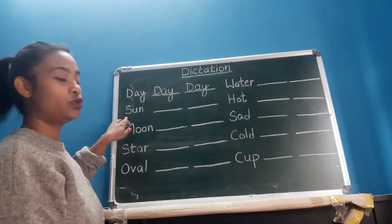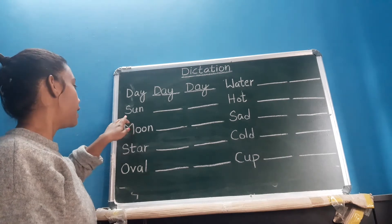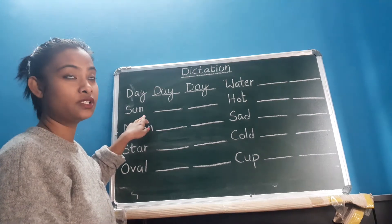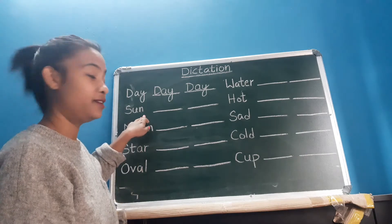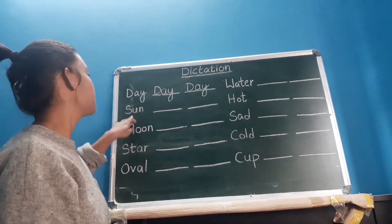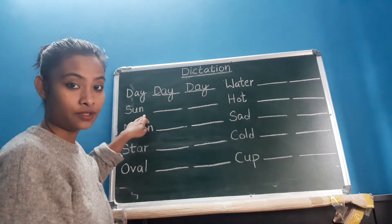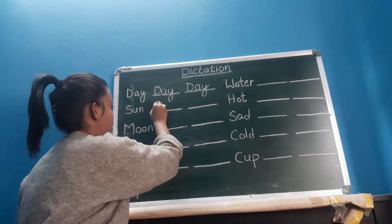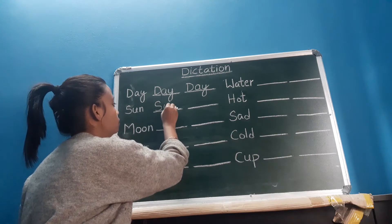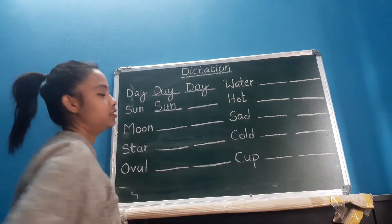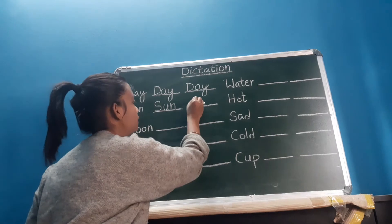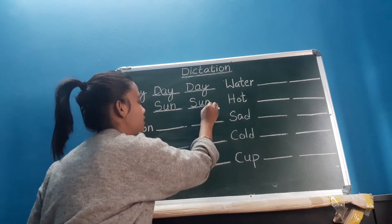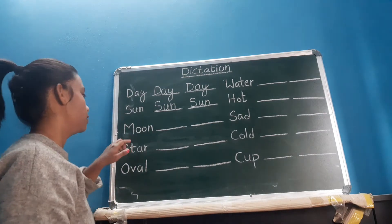Moving on to the next word: S, U, N — sun. You see the sun up in the sky in the day, yes? S, U, N — sun. You have to learn the spelling. S, U, N — sun. Once more, S, U, N — sun. All right?